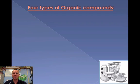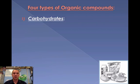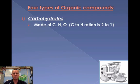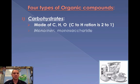Now let's talk about the four types of organic compounds. From the title, you should know that every one of these compounds contains carbon. The first organic compound is carbohydrates. From the name, you can tell the elements that comprise it: the "carbo" part has carbon, and "hydrate" means to add water. So carbohydrates have carbon, hydrogen, and oxygen, with hydrogen and oxygen in a two-to-one ratio.